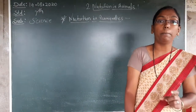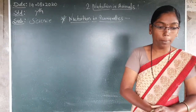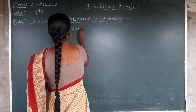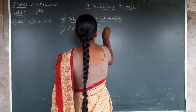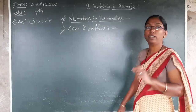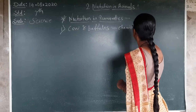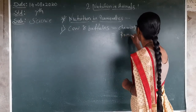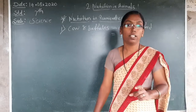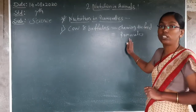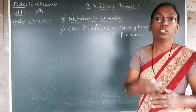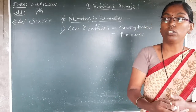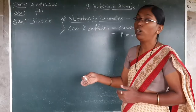Our first point is related to examples of ruminants — where the term comes from. Cows and buffaloes continuously chew their food; this means they ruminate. Buffaloes continuously chew their food, and they are called ruminants because they continue to chew the food. After eating, after a long time, the food comes back into the mouth and they continue to chew it.